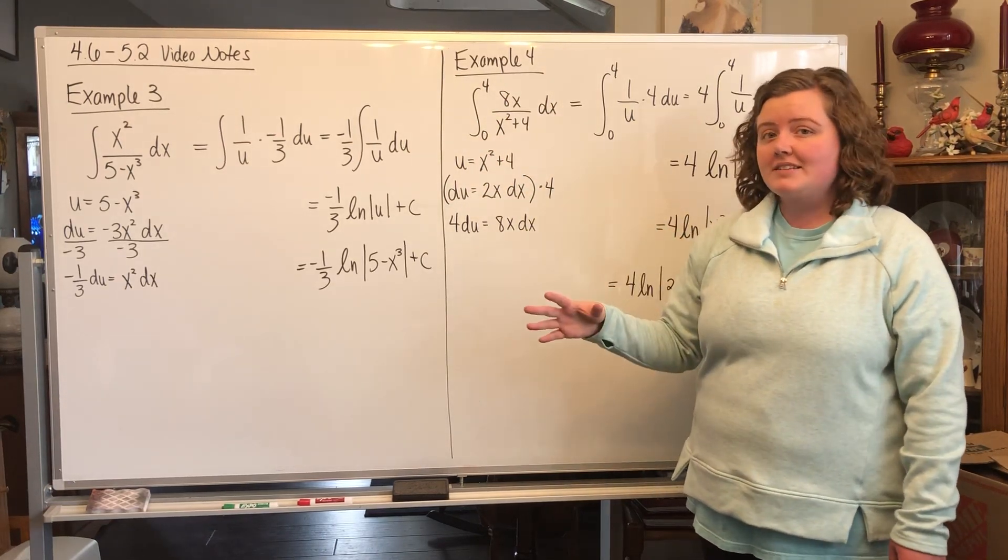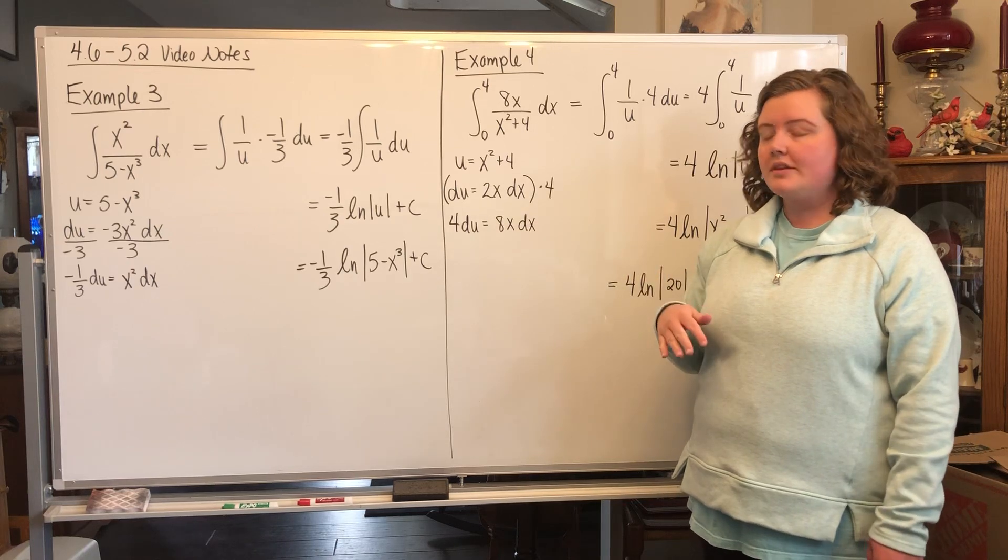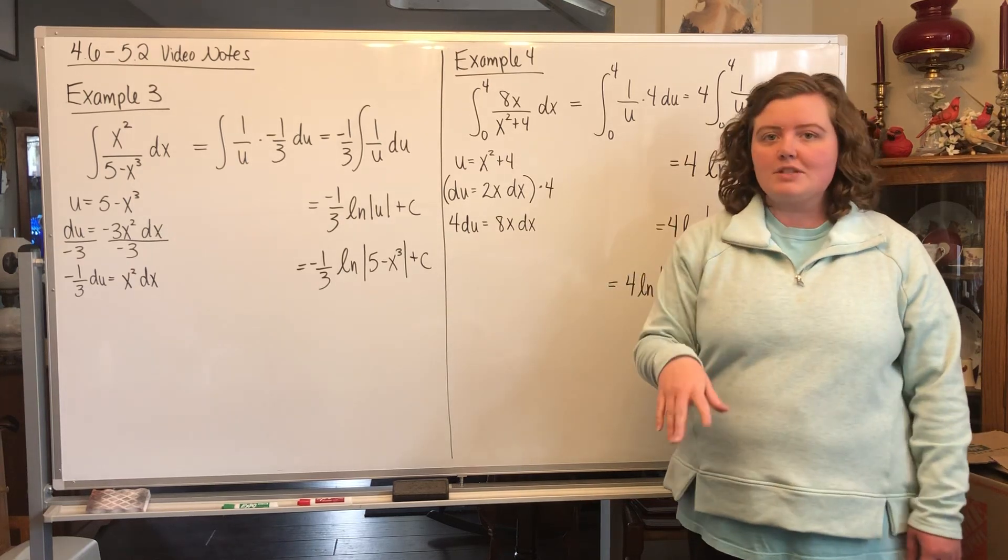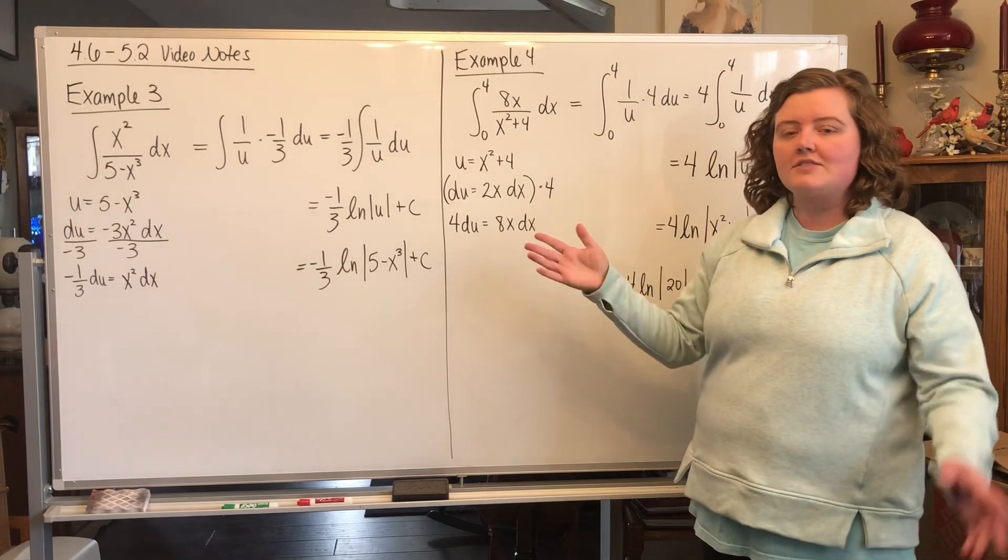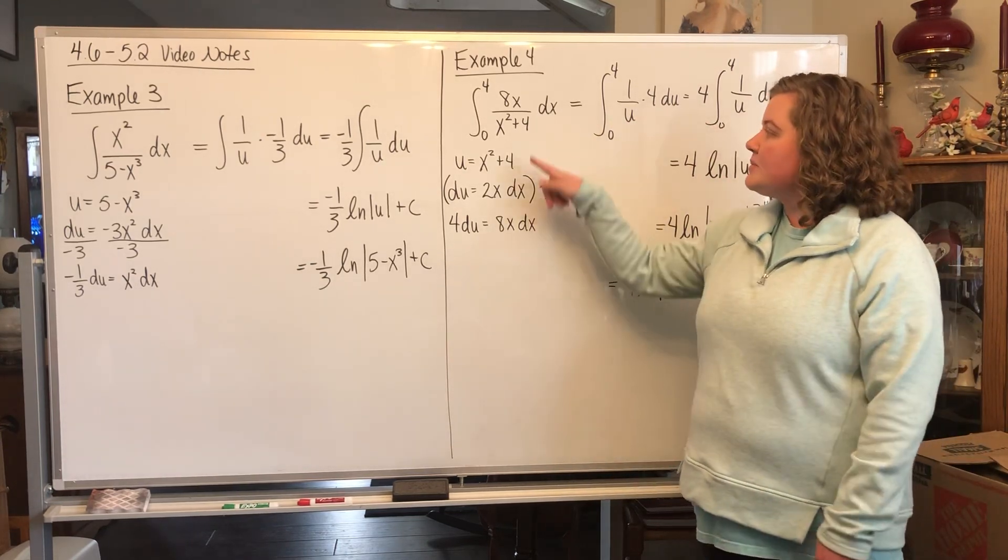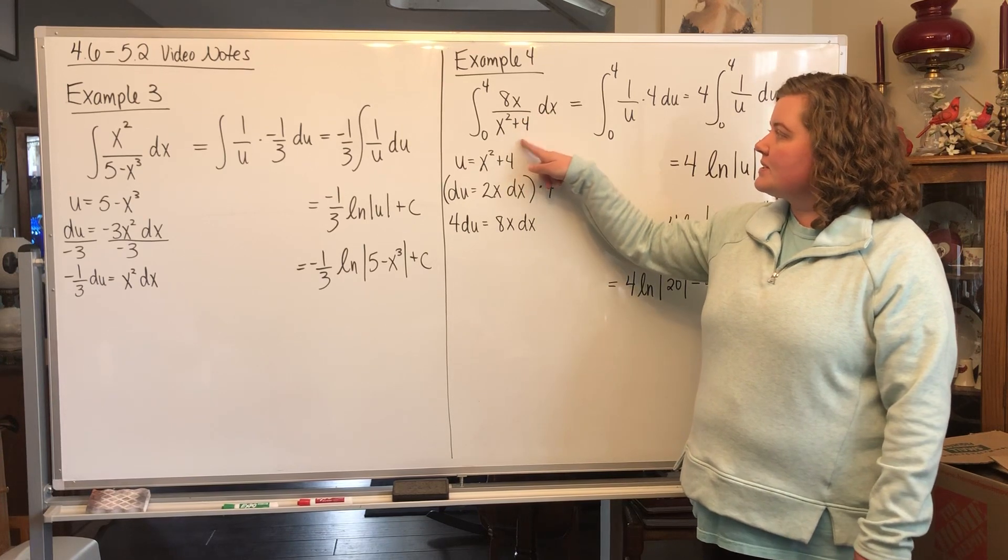I like to keep it in terms of x, so I don't have to keep changing things back and forth. You can do it however you want to, but I change everything back to x. I just keep those 0 to 4 the whole time because I don't have to change more than I have to. We have 8x over x squared plus 4 dx.